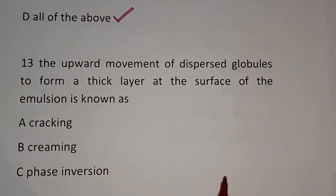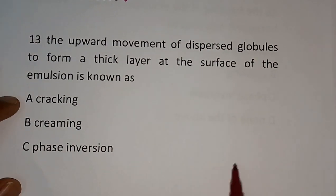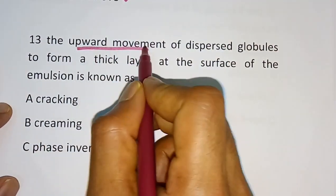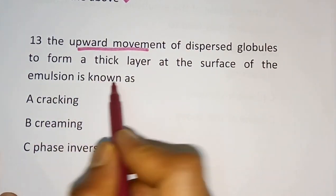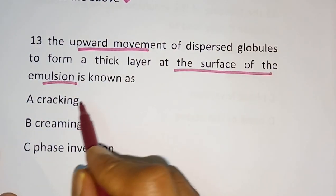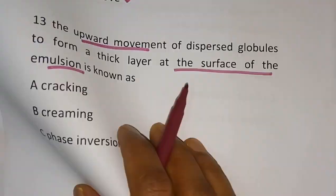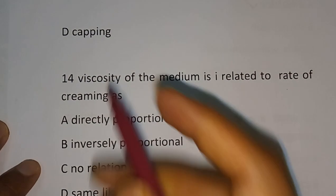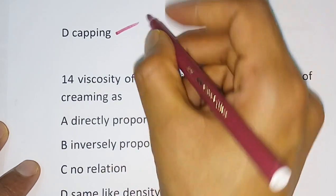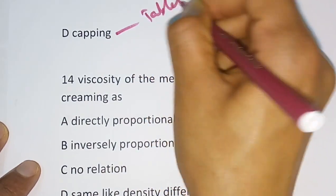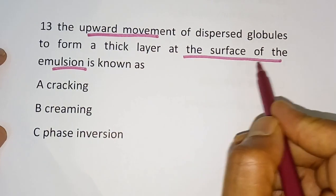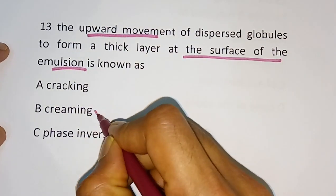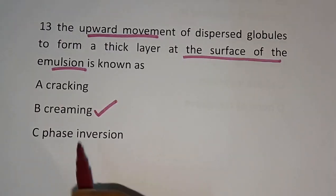Question number 13: The upward movement of dispersed globule to form a thick layer at the surface of emulsion is known as? Options are cracking, creaming, phase inversion, and capping. Capping is related to tablets. The correct answer is creaming — upward movement at the surface of the emulsion is called creaming.